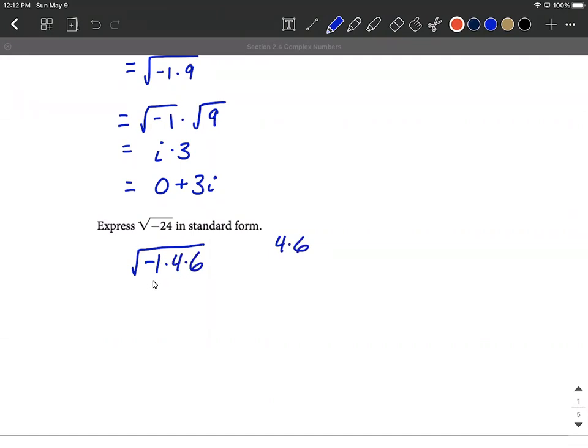All right, so for the negative one, we can replace that with an i. And for the time being, what I'm going to do is split this up one step at a time and put a square root over each one individually first. Now, as you get comfortable with these, you'll be able to speed up this process. So the square root of negative one is just going to be an i.